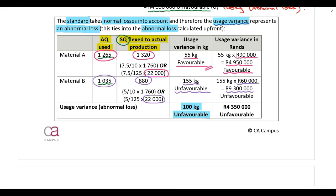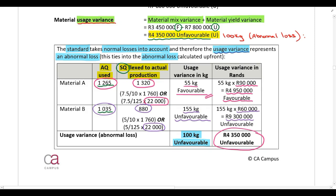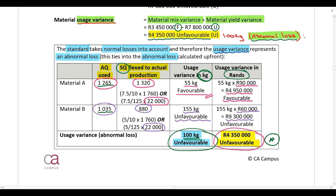What I'm really interested in is showing that the usage variance in kilograms — not just in rands — ties in to the abnormal loss we calculated at the beginning of the question. This proves that the usage variance represents an abnormal loss, and that the standard takes all normal losses into account.